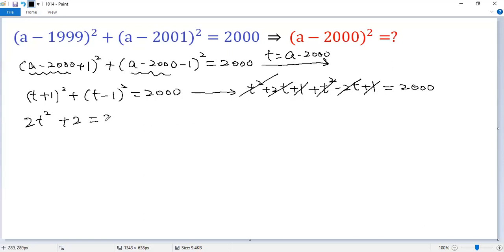So we get 2000. Then both sides subtract 2. So we get 2t squared equals 1998. Then both sides divided by 2. So we get t squared equals 999.